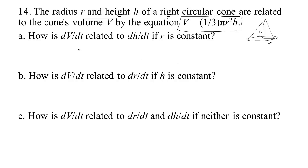The first problem asks: what is dV/dt if we assume that r isn't changing, so only h is changing? We take the derivative of both sides. We get dV/dt, and since r is a constant, (1/3)πr² are all constants, and then we just get dh/dt.